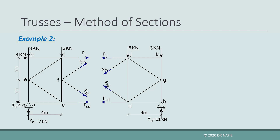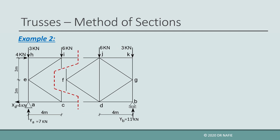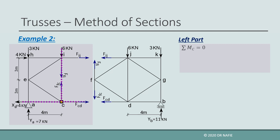To solve this problem, we need to evaluate at least one of the four unknown forces first using a different cut section, before returning to solve the remaining unknowns. We try a special cut that goes through members CD, CF, and FI. If we consider the left part and take the moment about point C, the three internal forces in CD, FC, and FI all pass through point C and will not be included in the moment equation. So the moment equation will have only one unknown — the force in IJ — which can easily be evaluated.